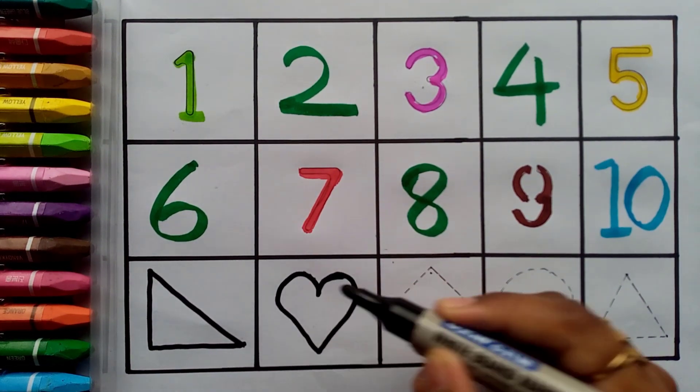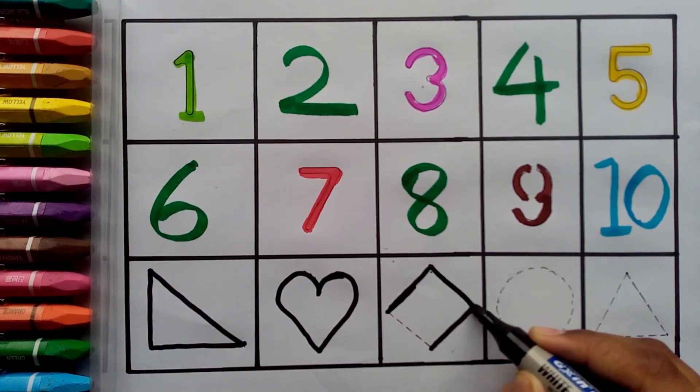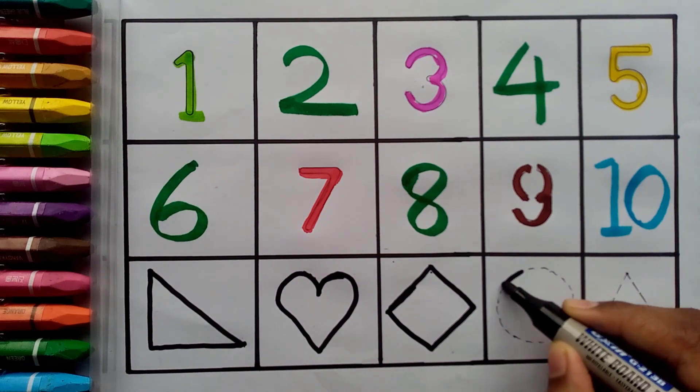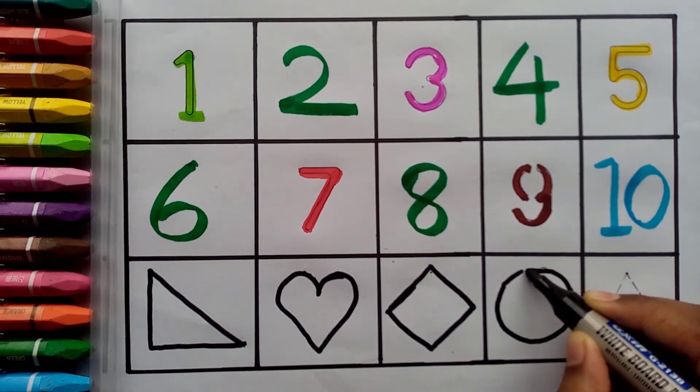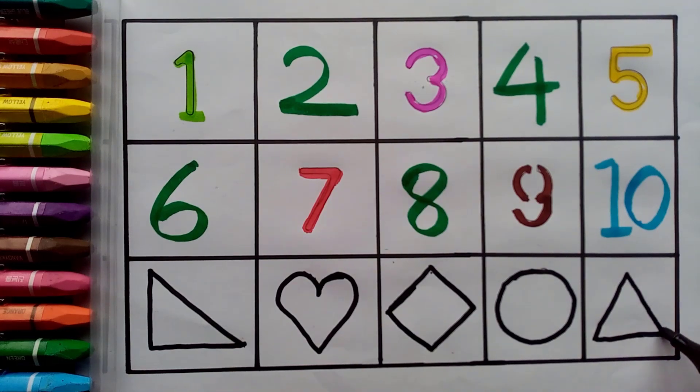Heart. Rhombus. Circle. Triangle. Let's learn some colors.